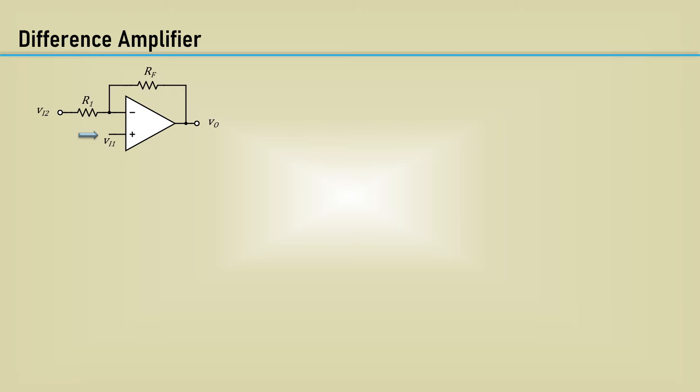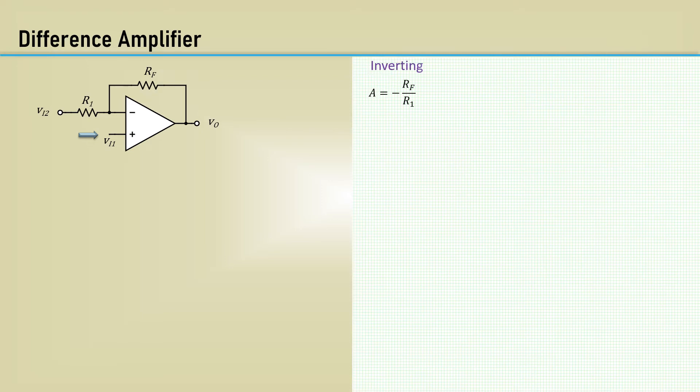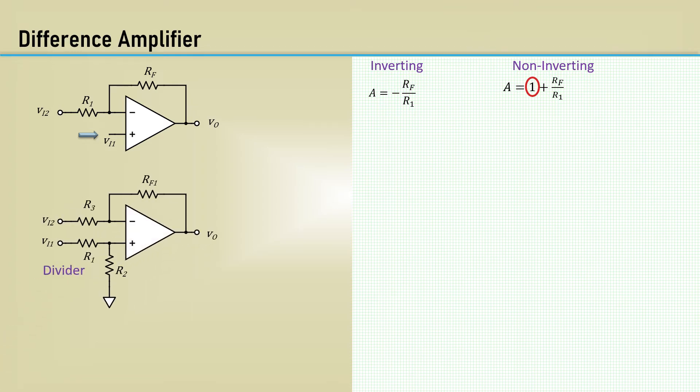Remember the gain of the inverting configuration is minus RF over R1, but the non-inverting gain is 1 plus RF over R1. It follows that the gain of the non-inverting input will be 1 greater than that of the inverting input. To fix that, the classic difference amplifier has a resistor divider on the input to lower the input to offset the extra gain of the non-inverting input.